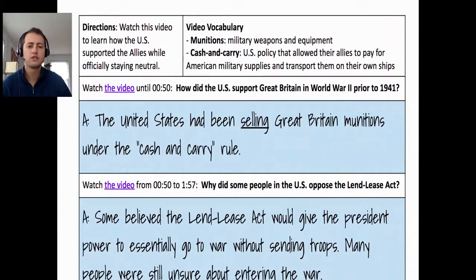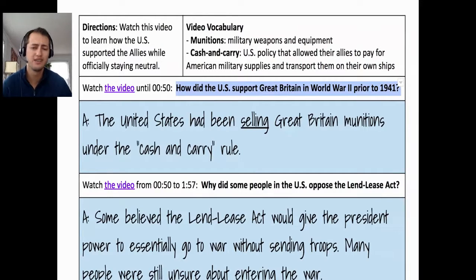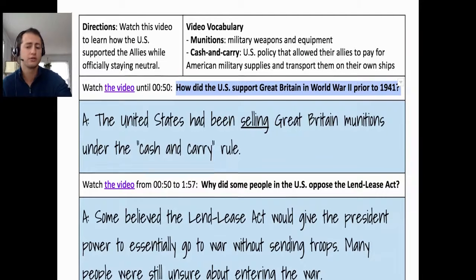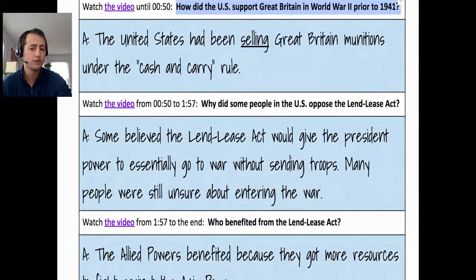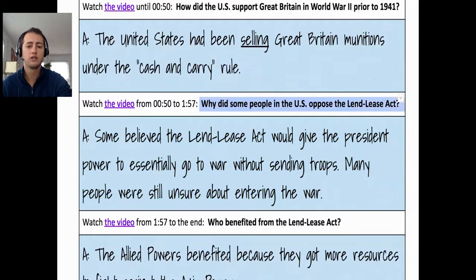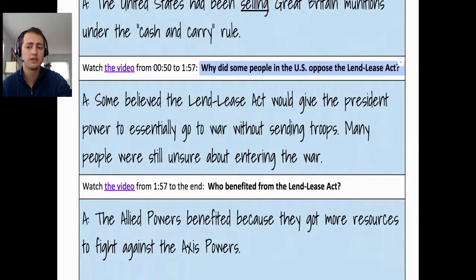For the video question — how did the US support Great Britain in World War II prior to 1941 — the answer is quick in the video and easy to miss, but it mentions the cash and carry rule: the United States had been selling Great Britain munitions under the cash and carry rule, which is very different from what the Lend-Lease Act would do, which is loaning supplies and materials to the Allied powers.